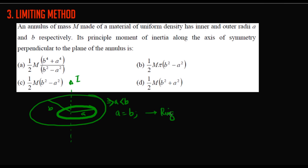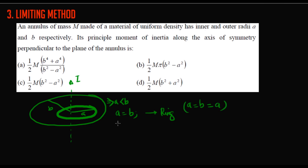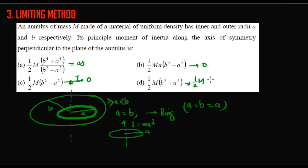When a = b, the annulus reduces to a ring. Let a = b = a. For a ring of radius a, the moment of inertia perpendicular to its plane is I = Ma². Checking the answer options with a = b, options reduce accordingly — the one that gives Ma² is the correct answer, which is Option C: M(a² + b²)/2, evaluated at a = b gives Ma².